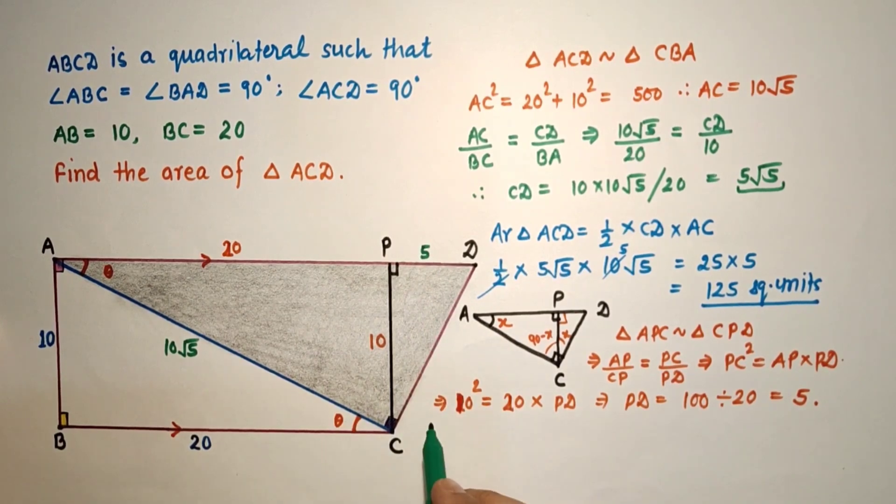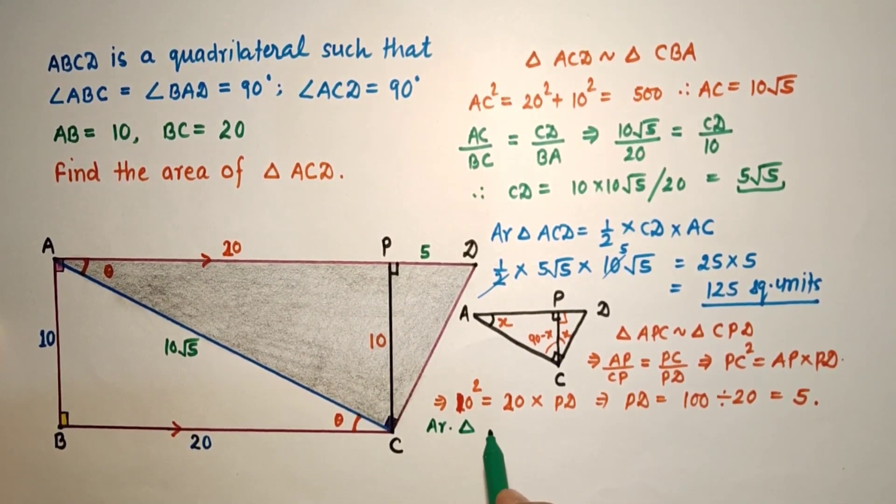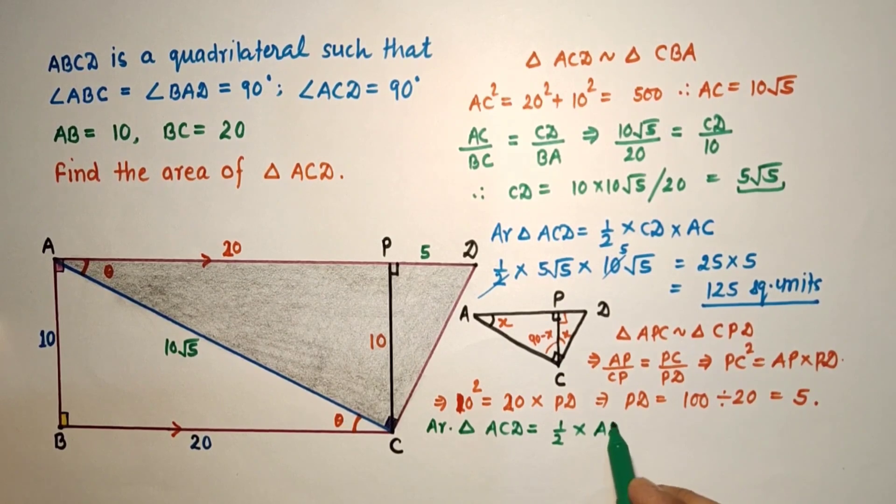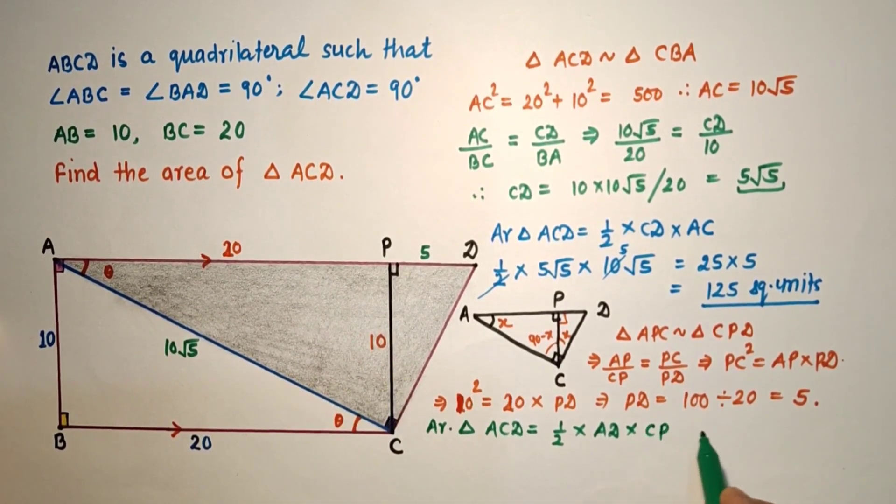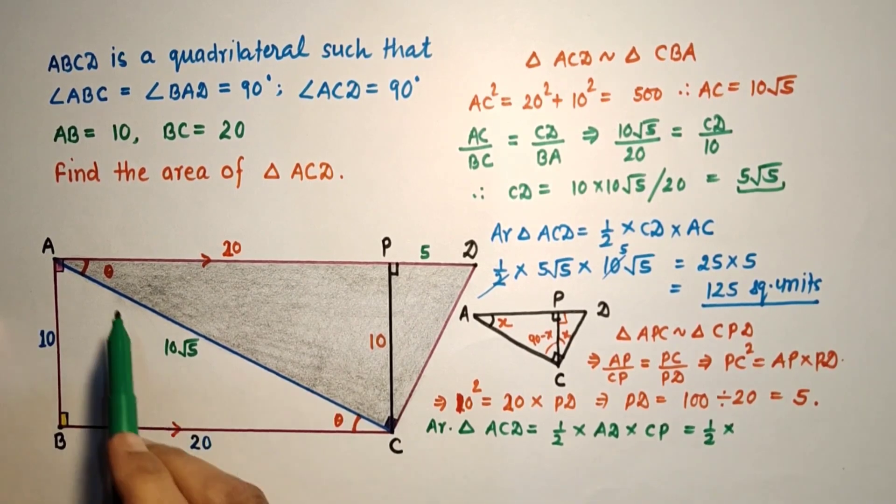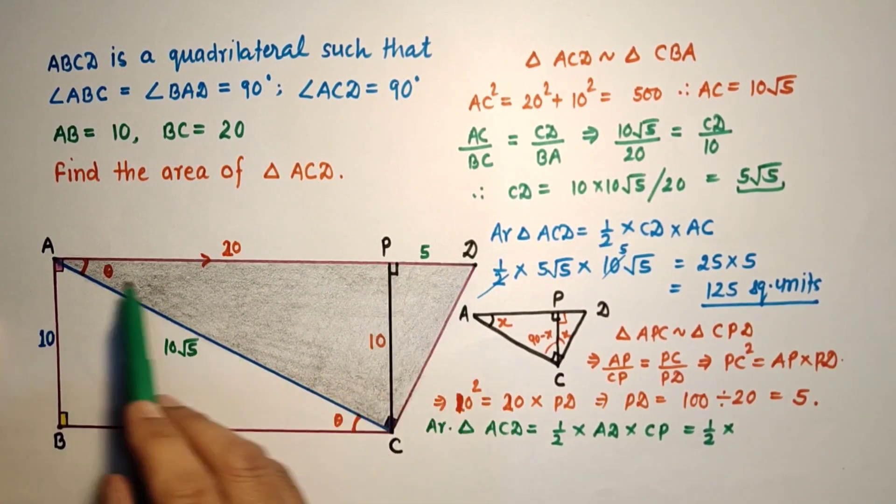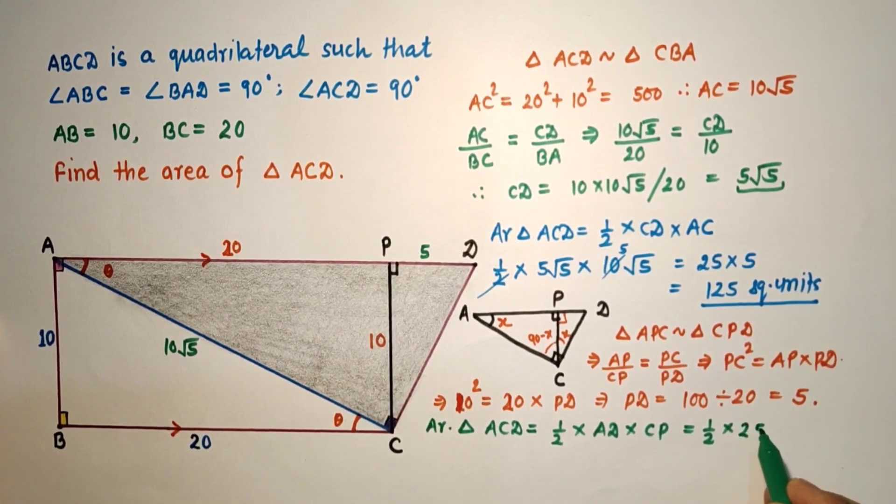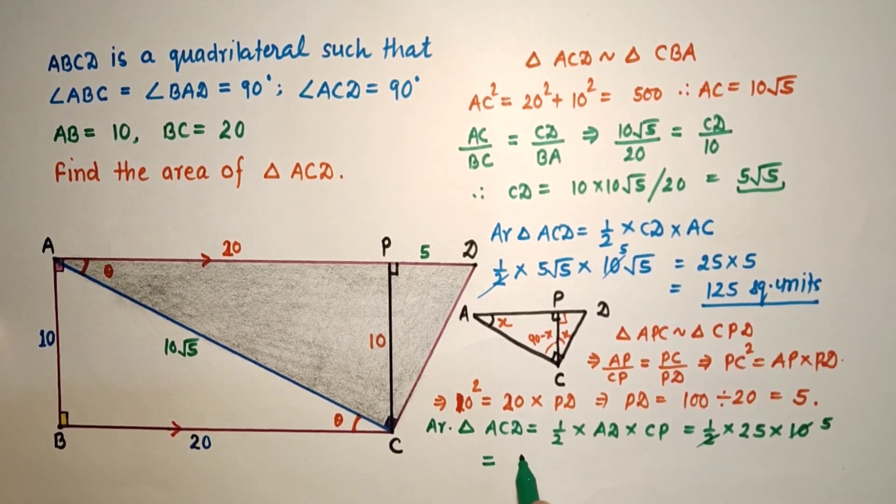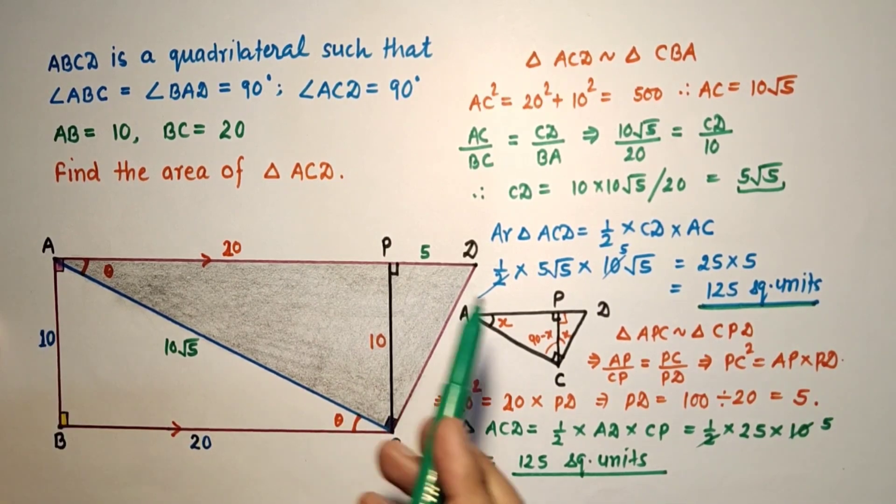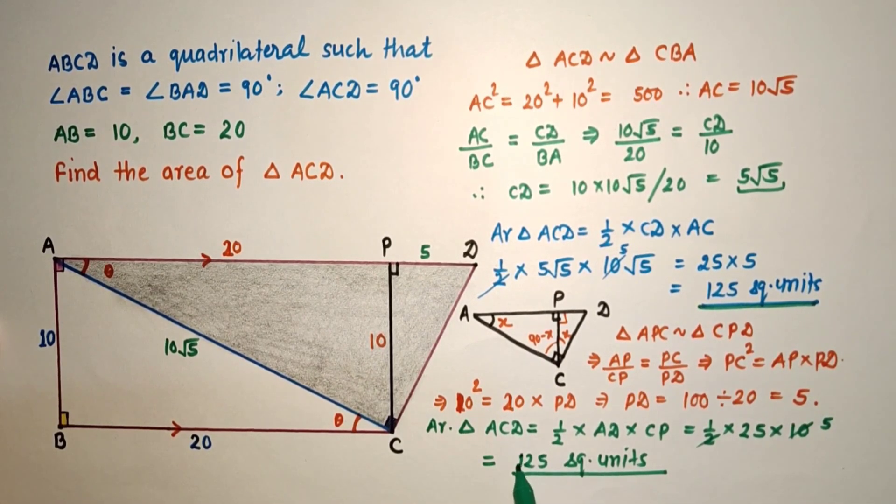Now this area, area of triangle ACD, is equal to half into AD, the base, into height CP. Half into, what is AD? AD is AP plus PD. AP is 20, PD is 5, so 25. CP is 10. We can cancel this: 25 times 5 is once again 125 square units. So this is the required area. Area of triangle ACD is 125 square units. That is the answer.